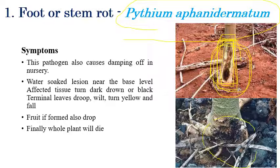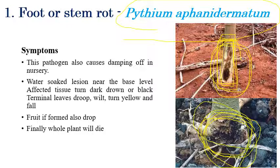Mostly no fruits can be developed because the plant will die before or during the nursery stage itself. If any fruits are formed, they will also droop. In case any mature fruits are found, the disease affects the quality and size of the fruits. Finally, the plant will die due to wilting.